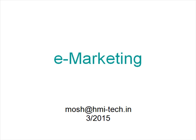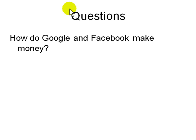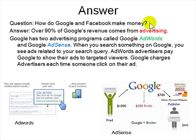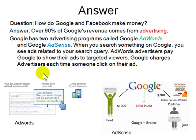Welcome to Introduction to E-Marketing. The first question is: how do Google and Facebook make money? The answer is they make money from advertising. Google has two programs called AdWords and AdSense. When you search something on Google, you see ads related to what you searched for. AdWords is where advertisers pay Google to show ads to targeted users — people who are interested, not everybody. Google charges advertisers each time someone clicks on the ad.